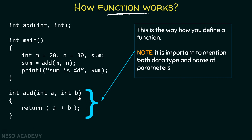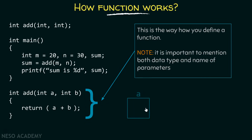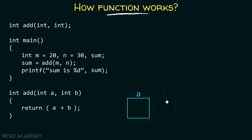You can easily spot the differences between the function definition, the function declaration, and when we are calling the function. Since I am creating two different variables a and b in this function, I should mention them here — variable a and variable b. These are the two new variables created by this particular function.